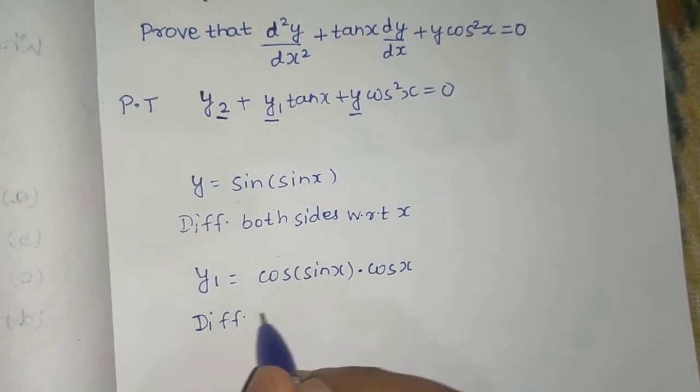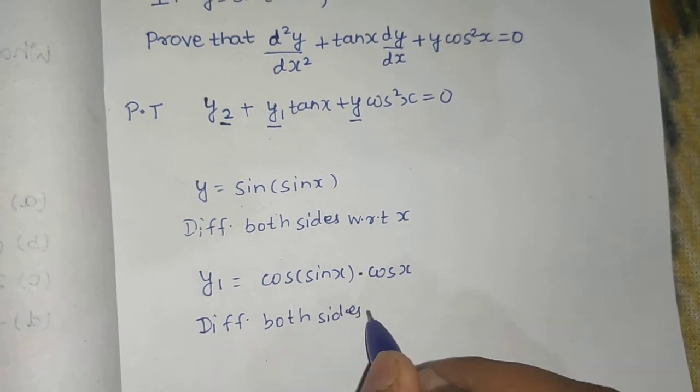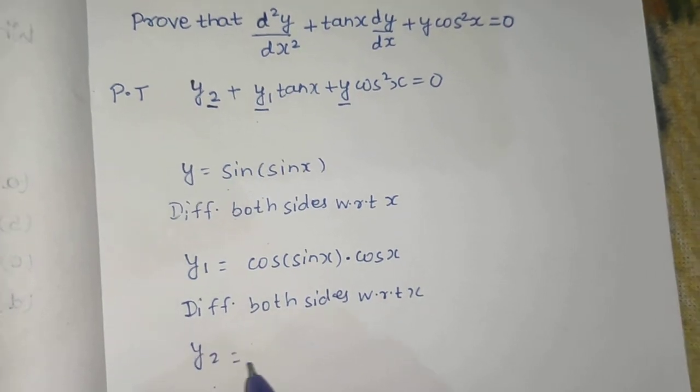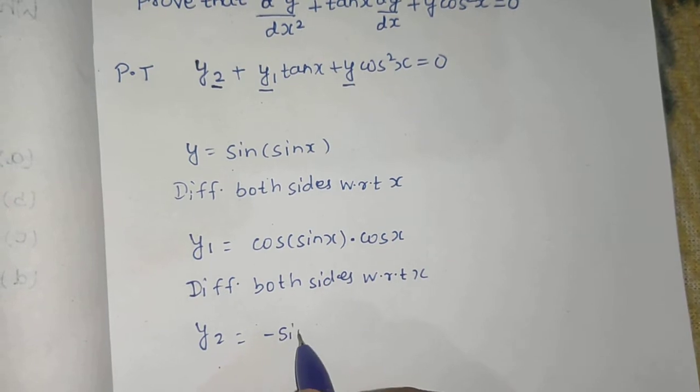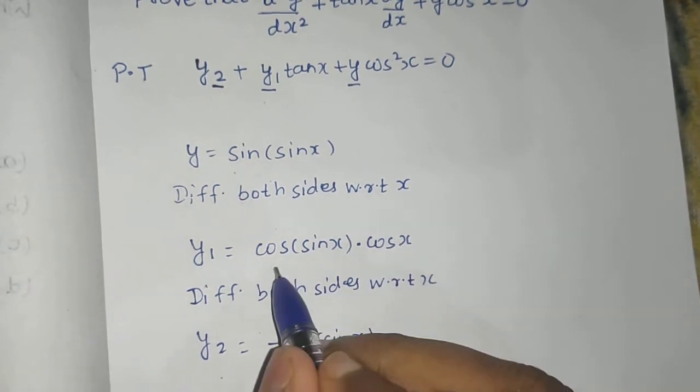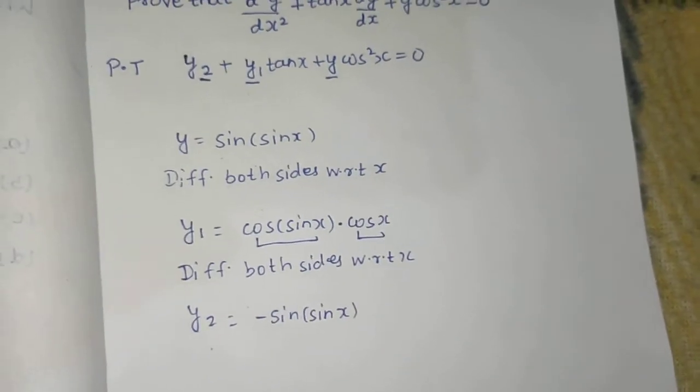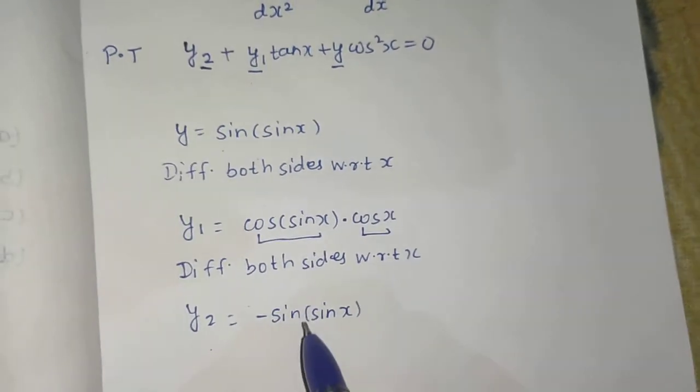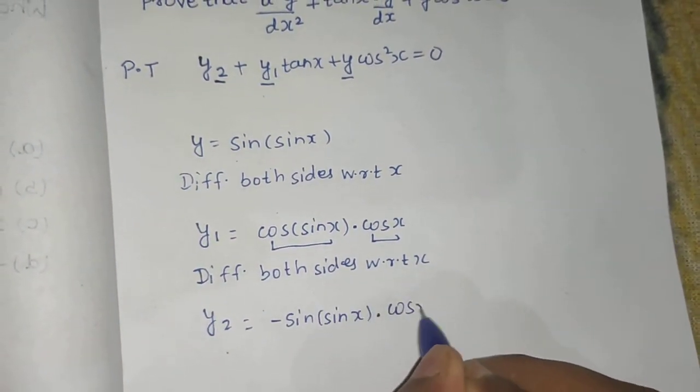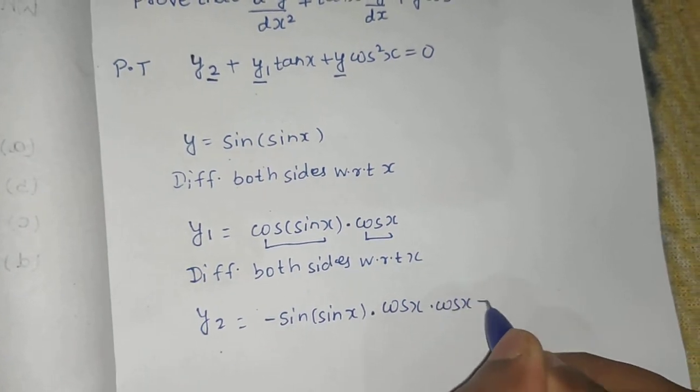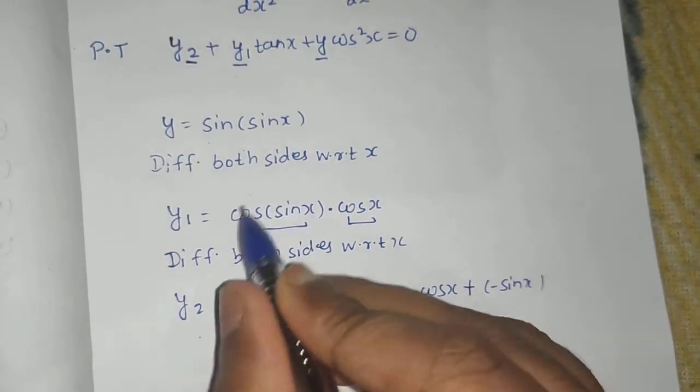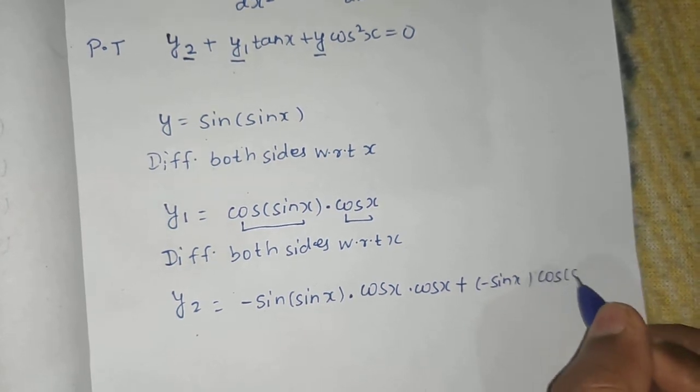So we will get, differentiating both sides with respect to x, the derivative of y1 is y2 equals to derivative of cos is minus sine, so minus sine of sine x. We go inside. This is the first function, this is the second function, so we will use the product rule. So minus sine sine x, derivative of sine x is cos x, this cos x as it is, plus derivative of this cos x which is minus sine x, and this time this complete remains as it is, so cos of sine x as it is.